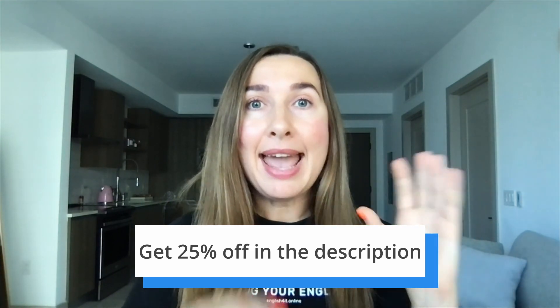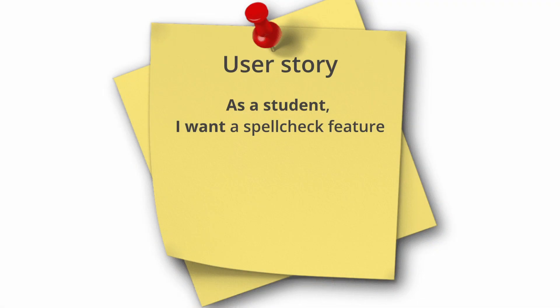So number one, we say 'as a who' — as an admin, as a student, as a project manager. Number two, say 'I want what.' What is the functionality? What is the goal of this functionality? What do you want it to do for the persona? On the learning platform, you want to have a spell check feature so that you can write grammatically correct.